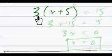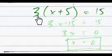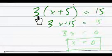3x plus 5 equals 15. We know, of course, that we need to multiply this 3 here and here. So we get, immediately we get 3x, I'm sorry, 3x plus 15 equals 15.